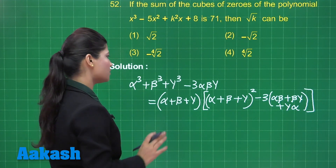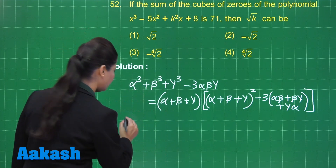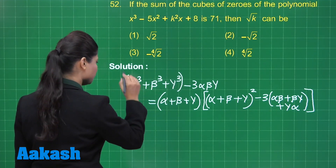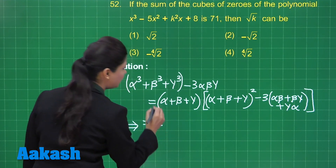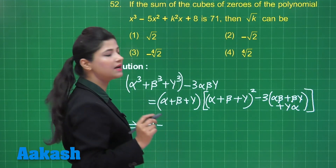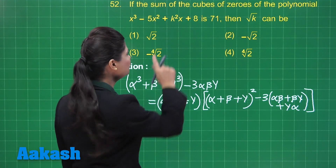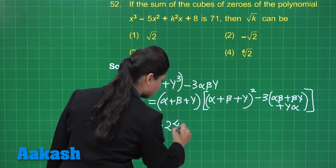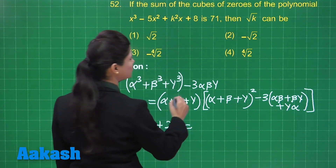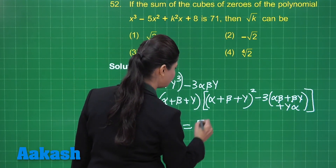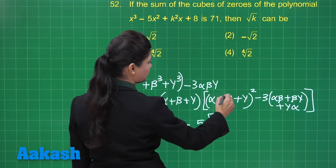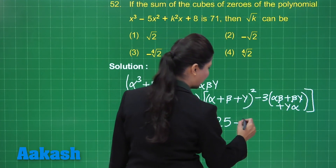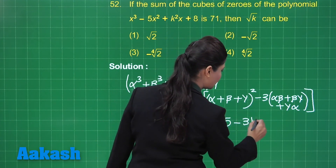Now we are aware of the values of these quantities, so let us substitute them. Alpha cubed plus beta cubed plus gamma cubed is given as 71, and minus 3 alpha beta gamma will be minus 3 times minus 8, that is plus 24. Next, alpha plus beta plus gamma will be equal to 5.